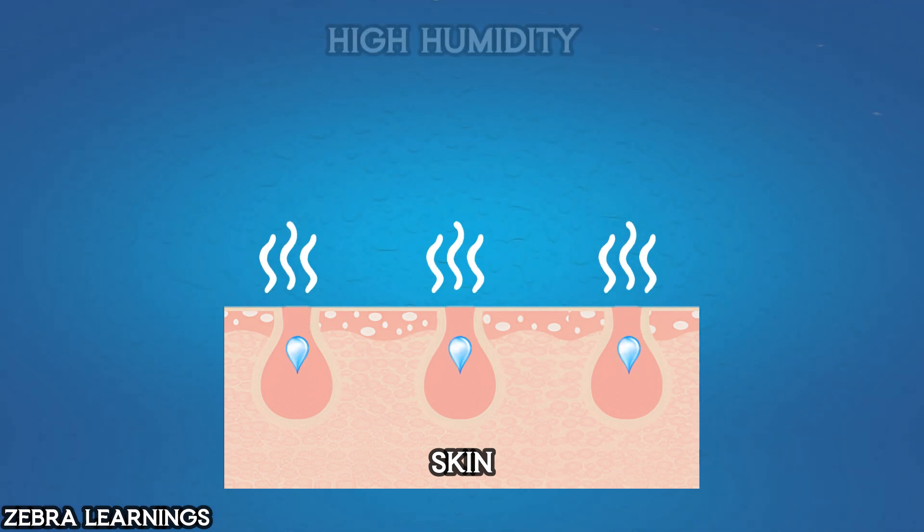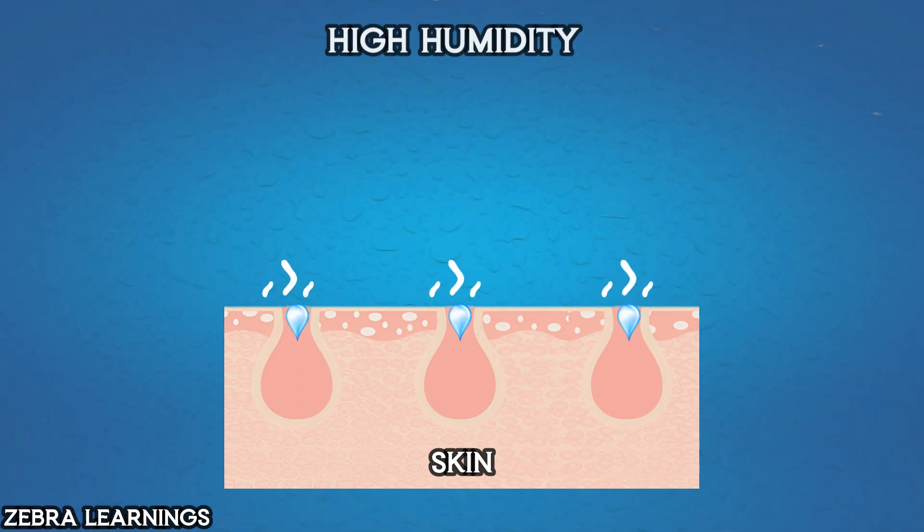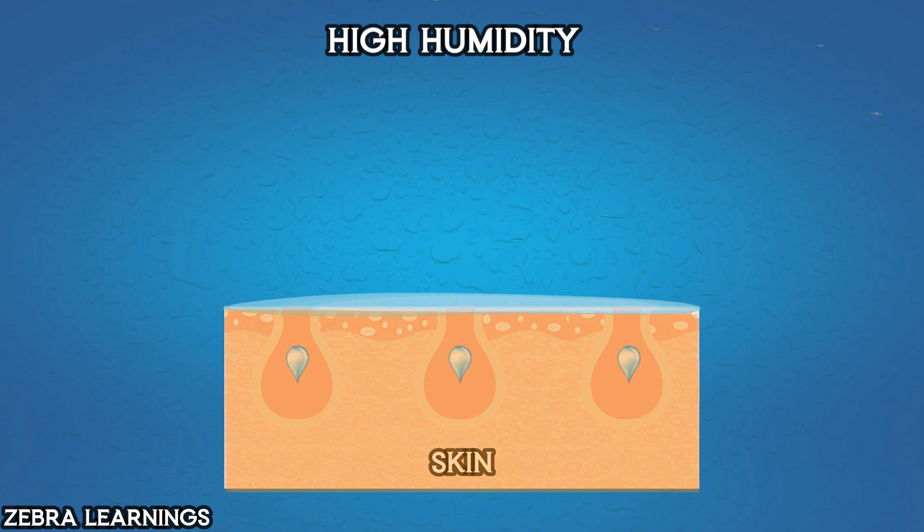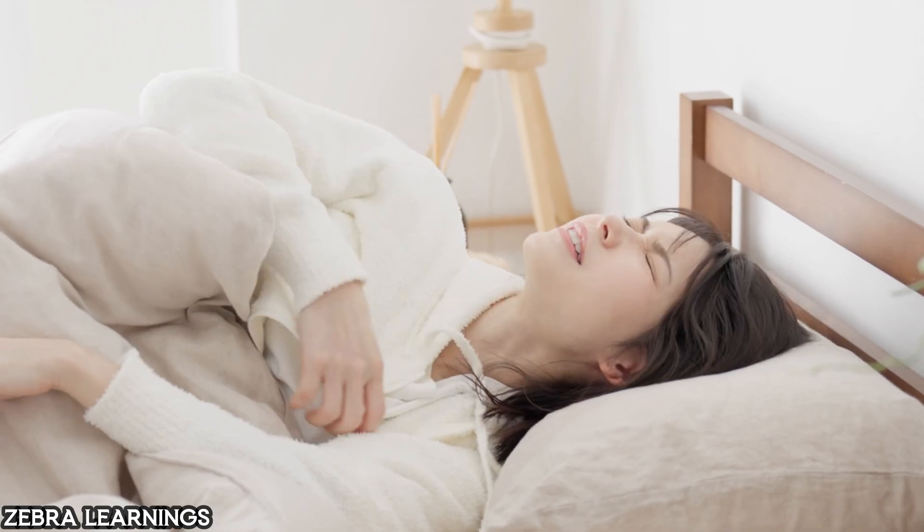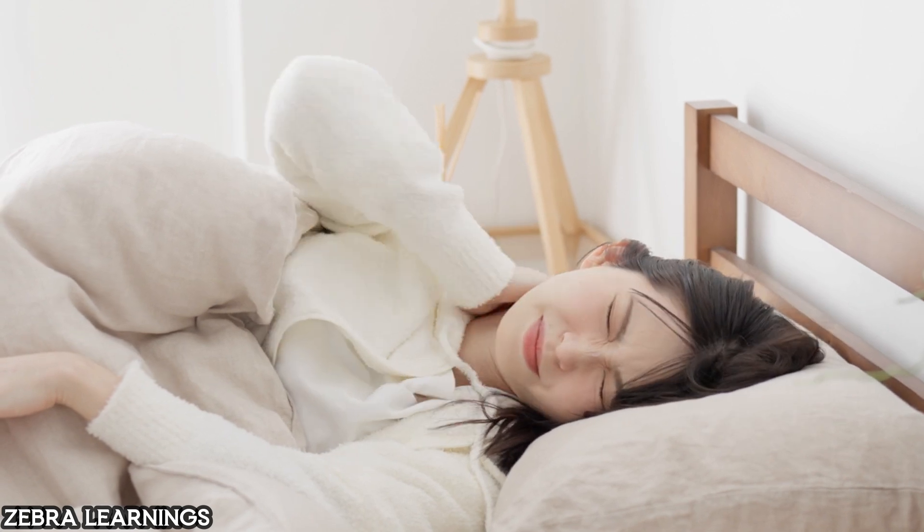However, when the humidity level in the atmosphere is high, the air cannot hold any more water vapor. Therefore, the sweat cannot evaporate and it remains on our skin. This prevents our body temperature from decreasing and makes us feel sticky due to the sweat remaining on our skin.